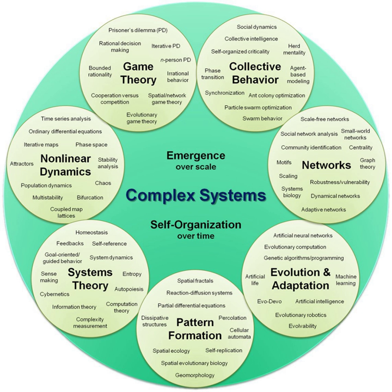Complex systems is chiefly concerned with the behaviors and properties of systems. A system, broadly defined, is a set of entities that, through their interactions, relationships, or dependencies, form a unified whole. It is always defined in terms of its boundary, which determines the entities that are or are not part of the system. Entities lying outside the system then become part of the system's environment.